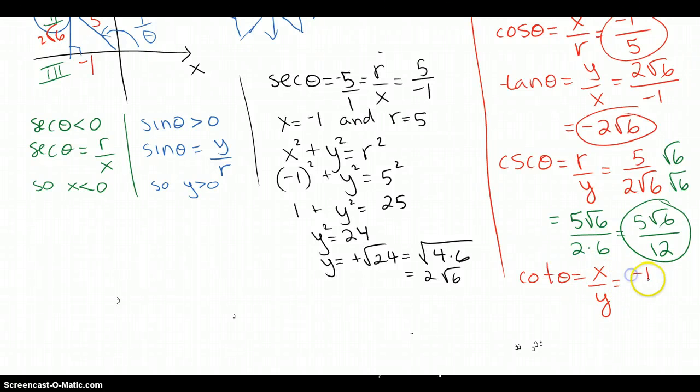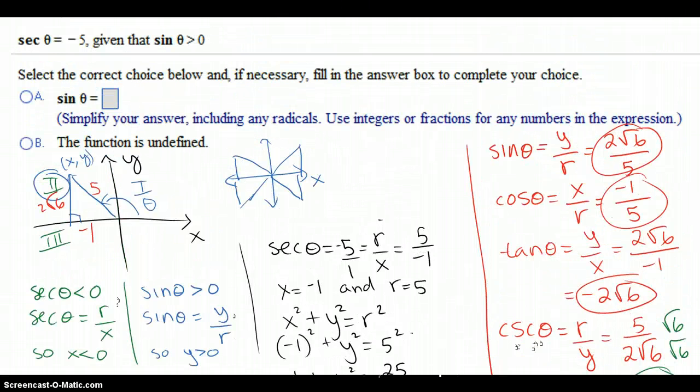And the x is negative 1, and the y is 2 square root of 6. Again, they're going to expect you to rationalize this, so we have to multiply top and bottom by the square root of 6. So what do we get for that one? It's negative square root of 6 over 2 times square root of 36, which square root of 36 is 6. So it's negative square root of 6 over 12, and that is the final answer they expect you to type.